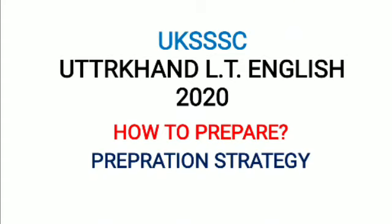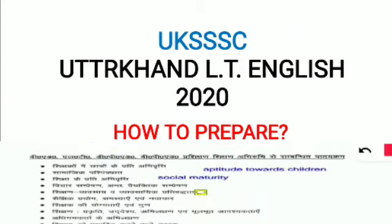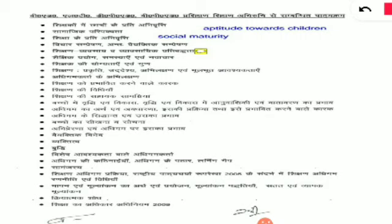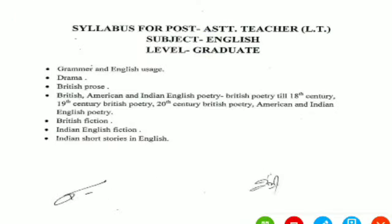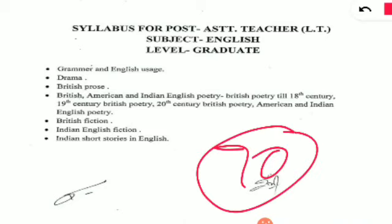We will take you to the Uttrakhand LT syllabus. You all know that our paper is 100 marks. It includes teaching aptitude, and MCQs will be provided very quickly. After that, we will come to the subject of 70 marks — this is your English syllabus for 70 marks.